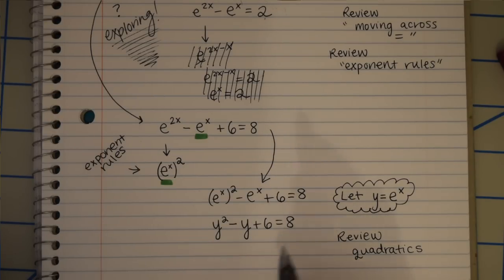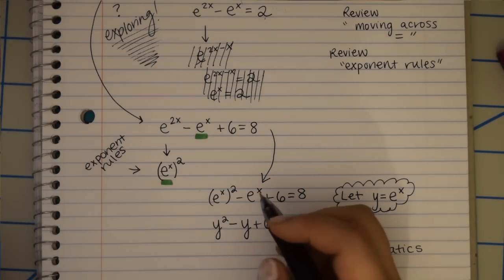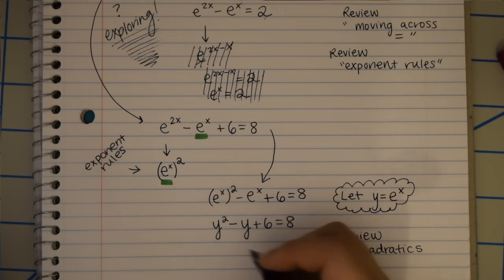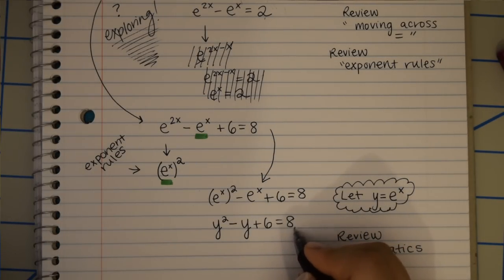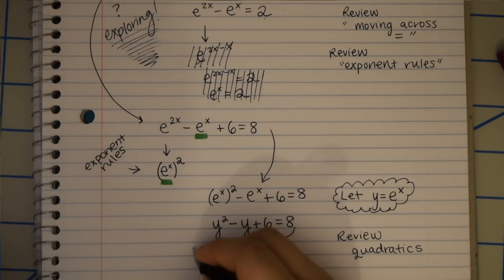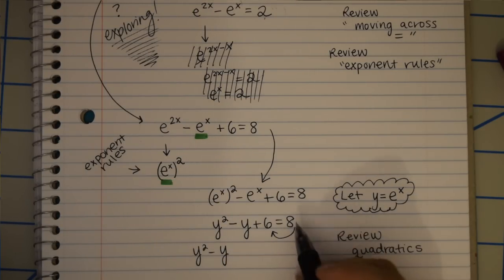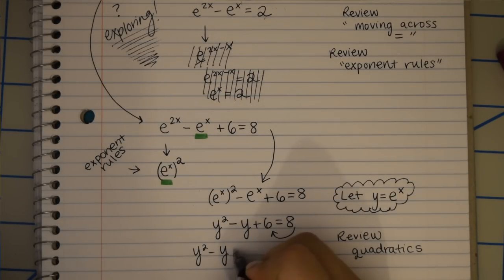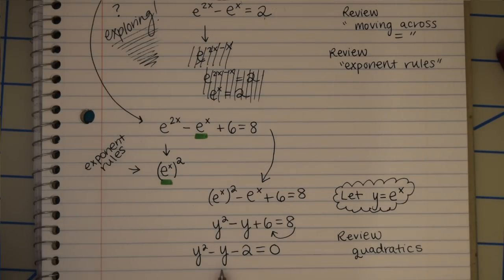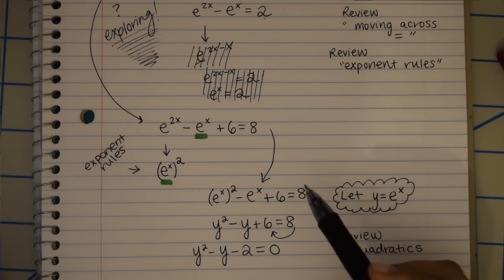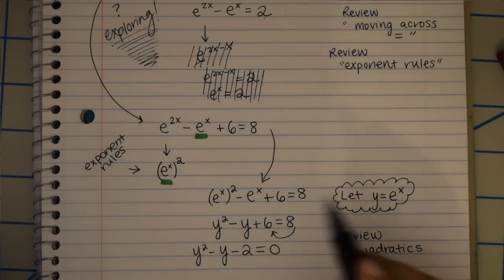So how to solve this, we can rearrange it so that we have the form ax squared plus bx plus c equals zero. So we'll move this 8 over here by subtracting 8. So plus 6 minus 8 is minus 2 equals zero. At this point, before we jump into using the quadratic equation, the negative b plus or minus square root of b squared minus 4ac over 2a, we can actually first try to factor this, which we can.